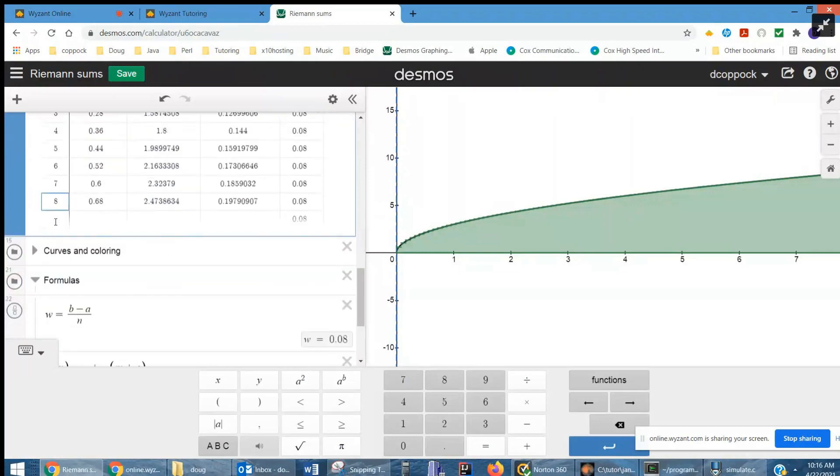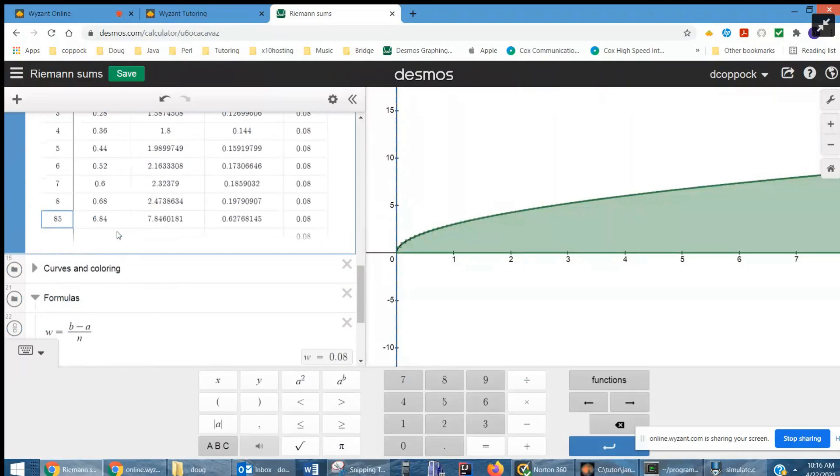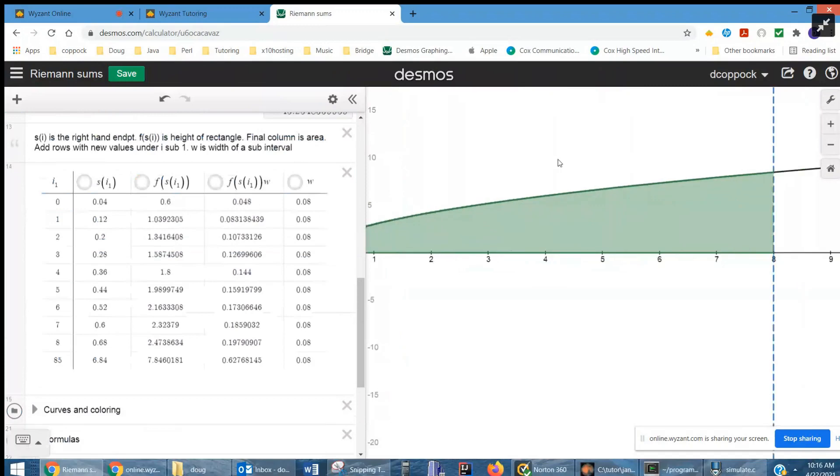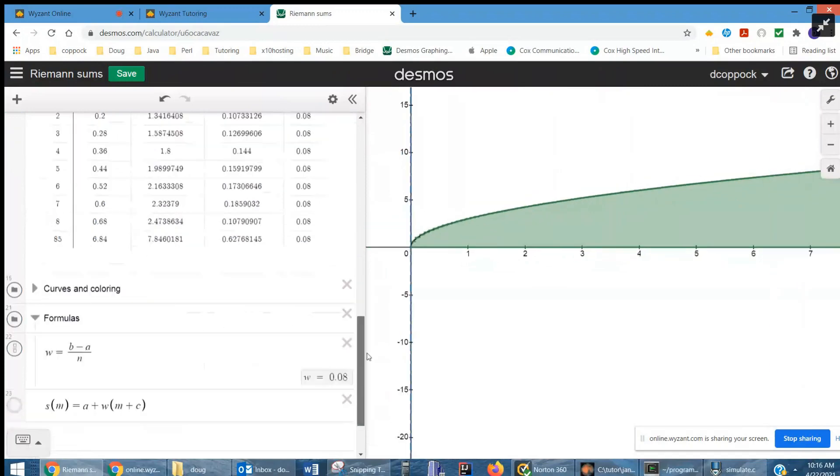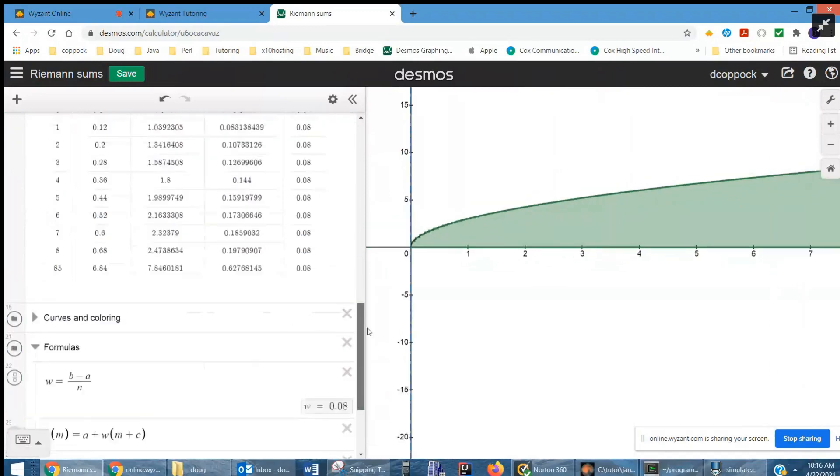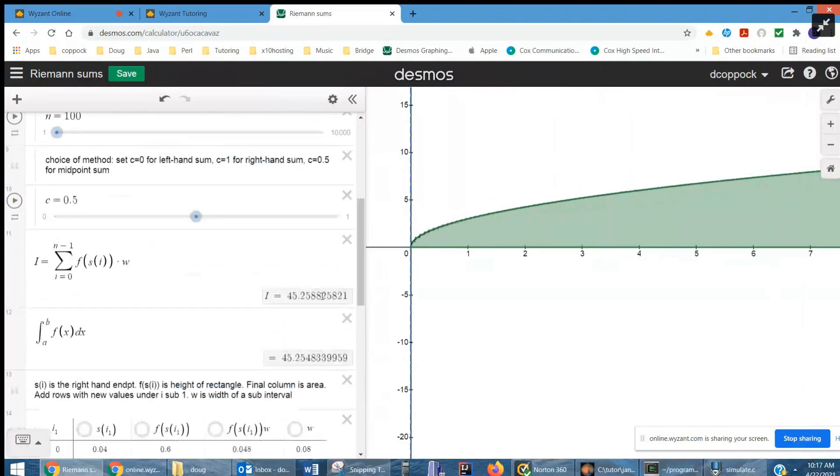So, for example, the area of the 85th rectangle or the 86 is 0.627, et cetera. Okay, so the areas of these rectangles are fairly small, but if you add them together, this is what you get right here, 45.25.